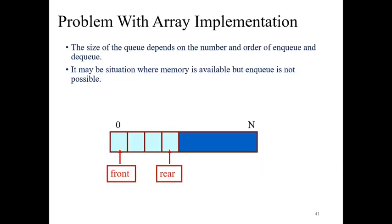But of course there are problems with arrays. The size of Queue depends on the number and order of the enqueue and the dequeue. Sometimes, there may be a situation where memory is available but enqueue is not possible there. So you can see from the animation how it happens.